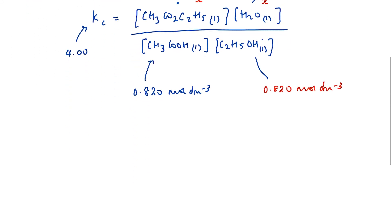Because I know that 4.00, Kc, is going to equal x squared over 0.820 times itself squared.